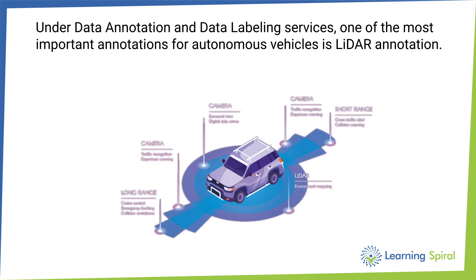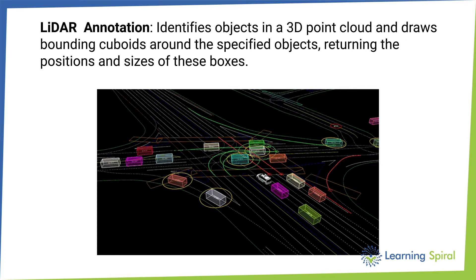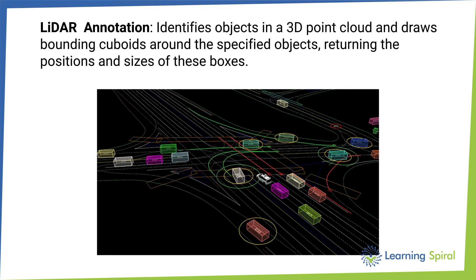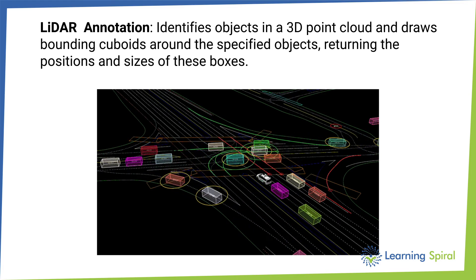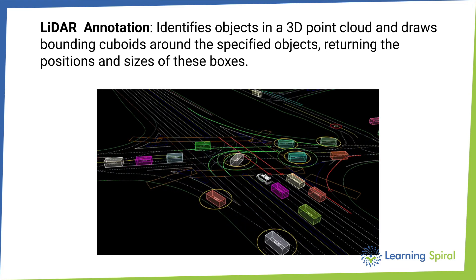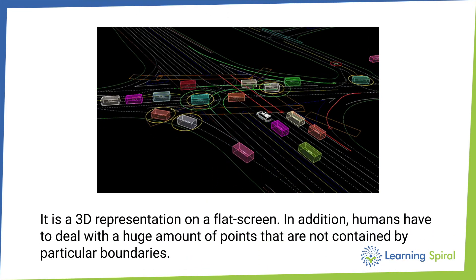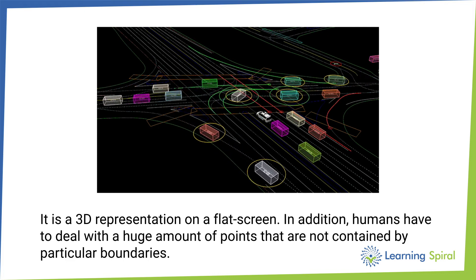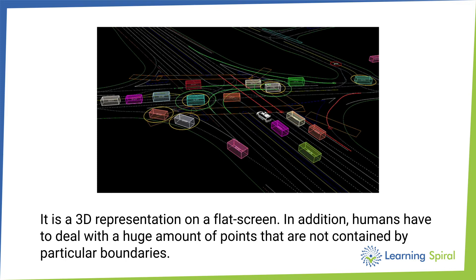LiDAR annotation. Under data annotation and data labeling services, one of the most important annotations for autonomous vehicles is LiDAR annotation. LiDAR annotation identifies objects in a 3D point cloud and draws bounding cuboids around the specified objects, returning the positions and sizes of these boxes. It is a 3D representation on a flat screen. In addition, humans have to deal with a huge amount of points that are not contained by particular boundaries.